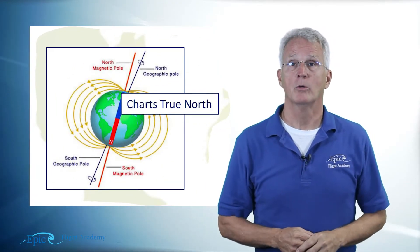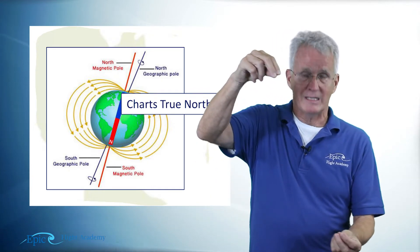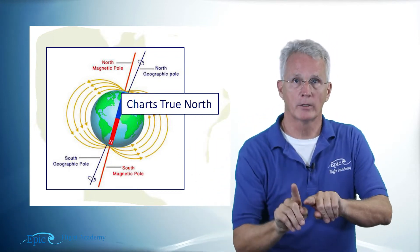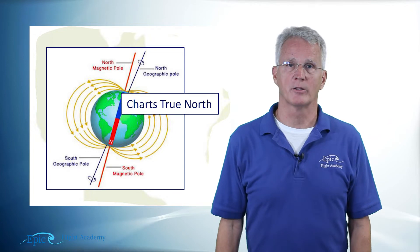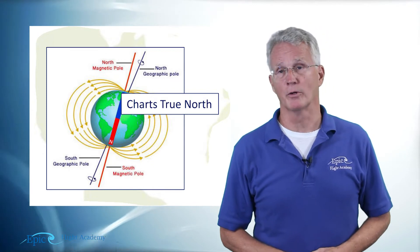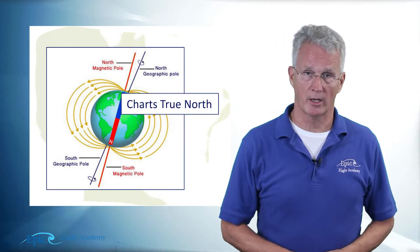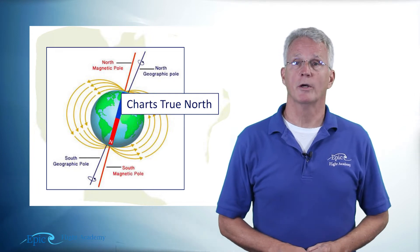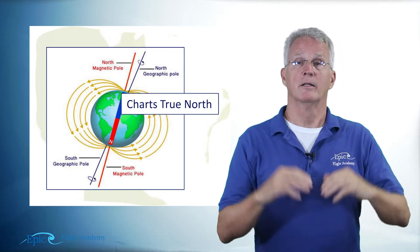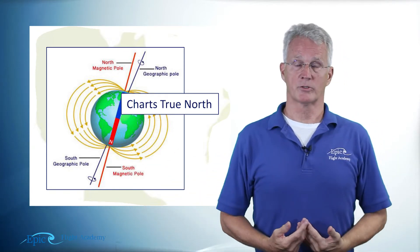These lines of longitude are oriented toward true north. True north is the point where the axis of rotation of planet Earth theoretically comes through the north and south side of the planet. I mention that because that's not the same as magnetic north.